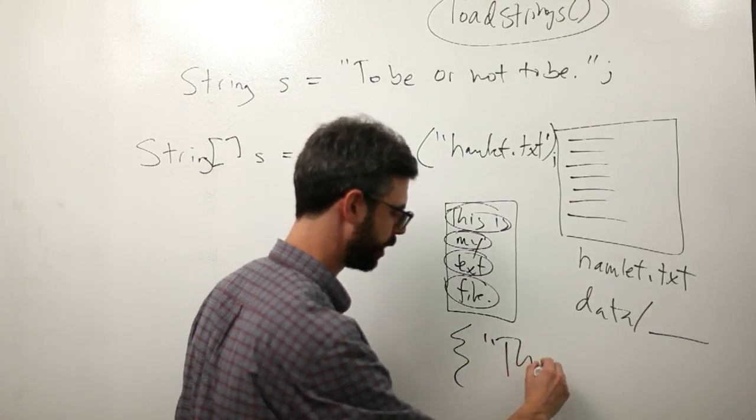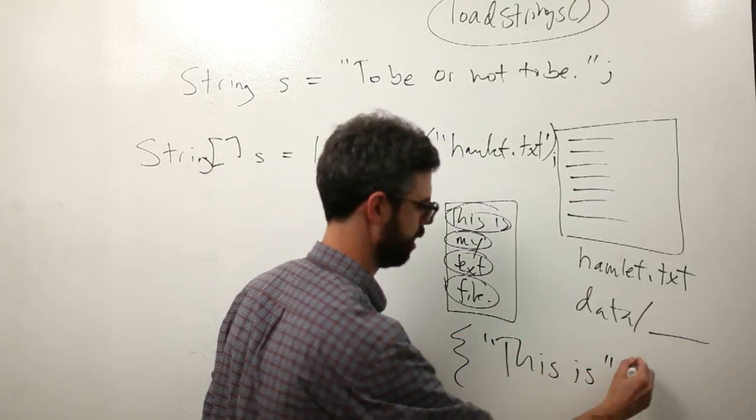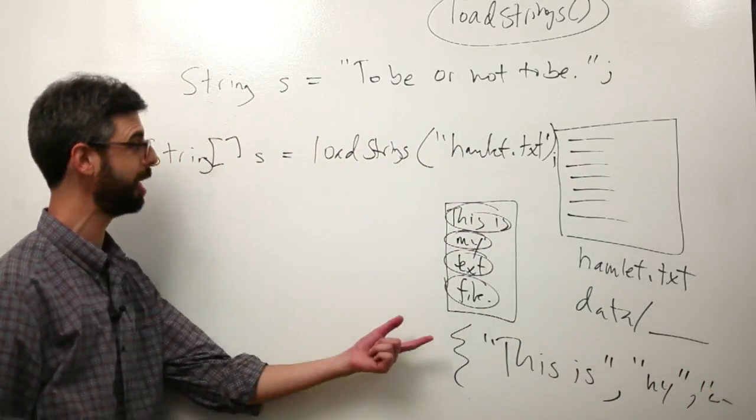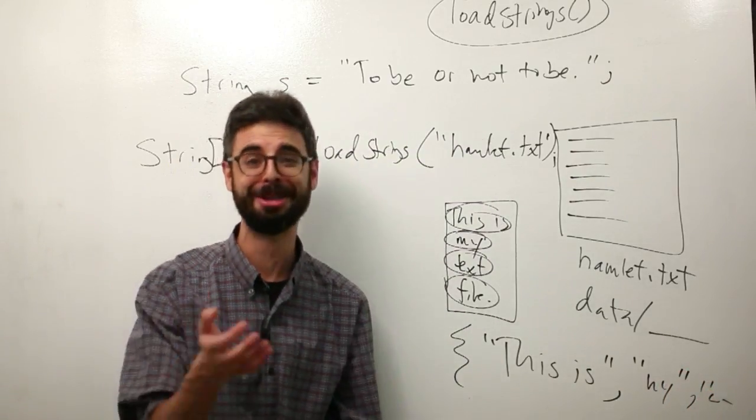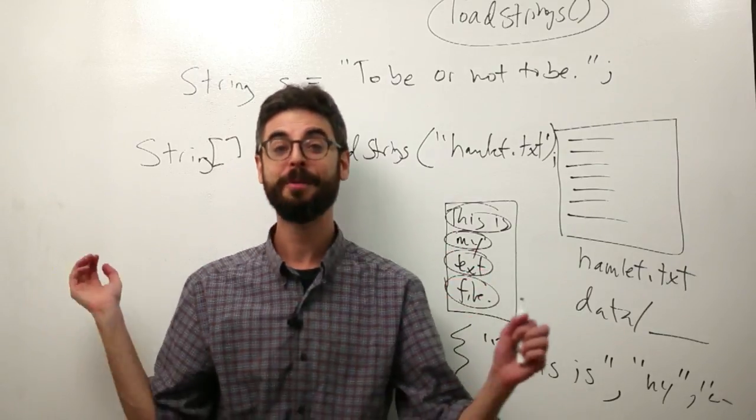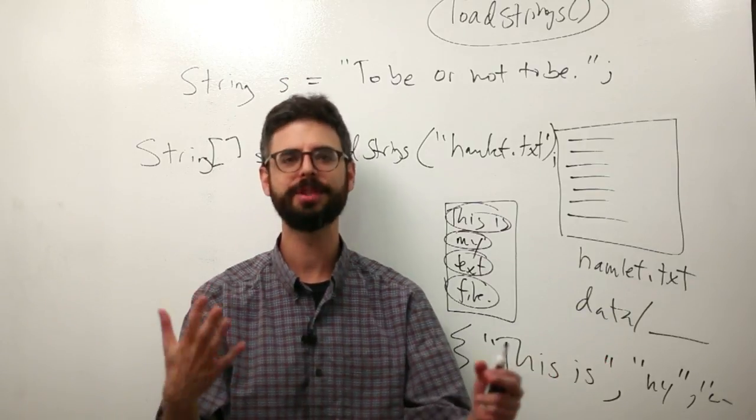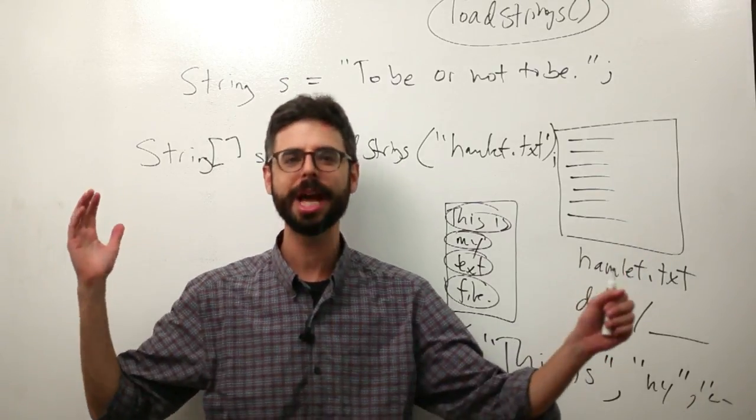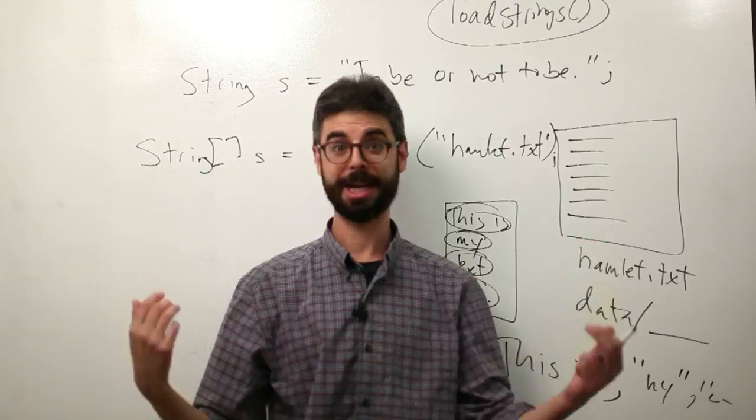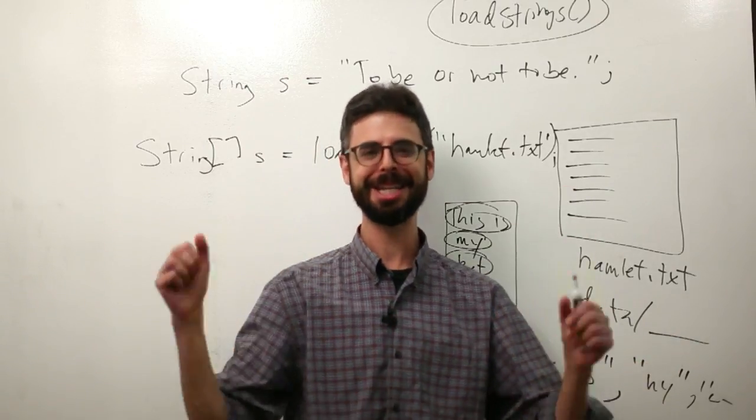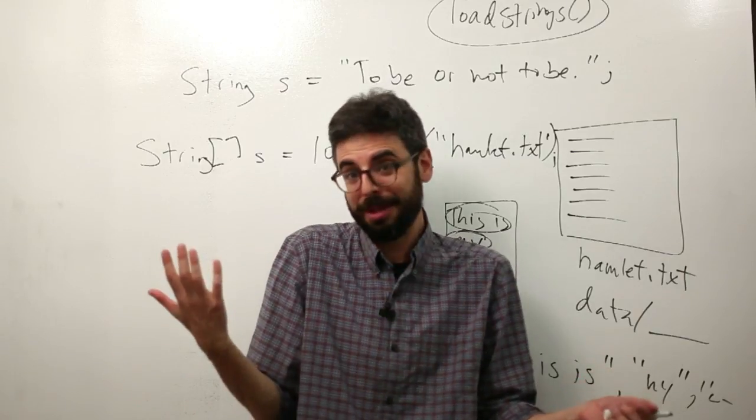LoadStrings will take each line of text and make it a separate element in an array. So in other words, the first element of the array would be 'this is', the next element would be 'my', the next element would be 'text', etc. So there's a lot of scenarios where this is actually useful.